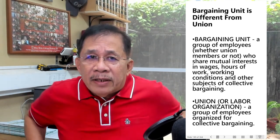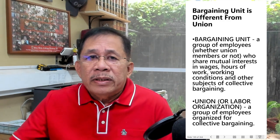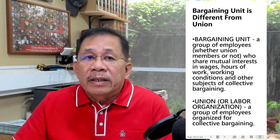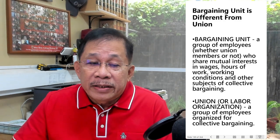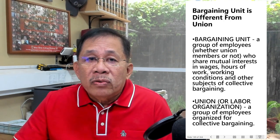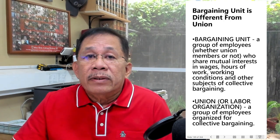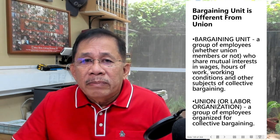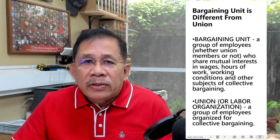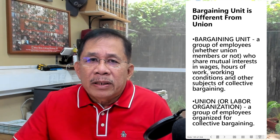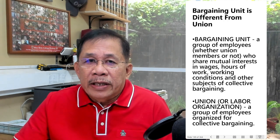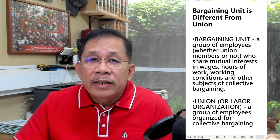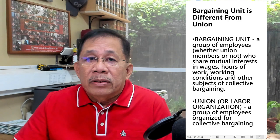A bargaining unit is different from a union. A bargaining unit is a group of employees, whether union members or not, who share mutual interest in wages and other subjects of collective bargaining. On the other hand, a union is a group of employees organized for collective bargaining. That is why it is possible that two or more unions may exist in a bargaining unit, and which union will represent the bargaining unit will be settled through certification election. The union that wins in the election will be certified as the bargaining agent of the bargaining unit.